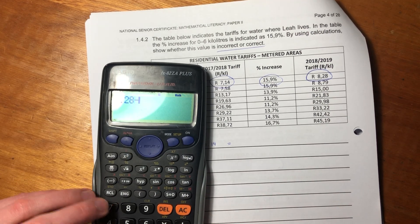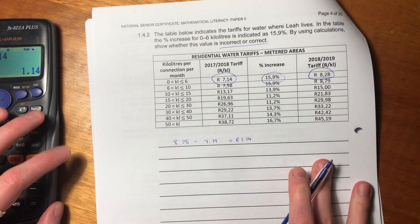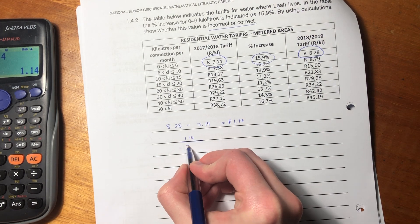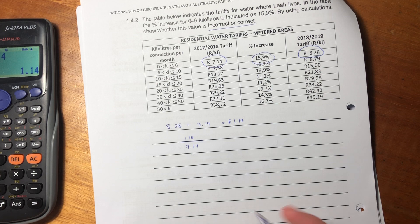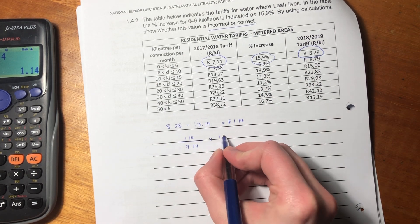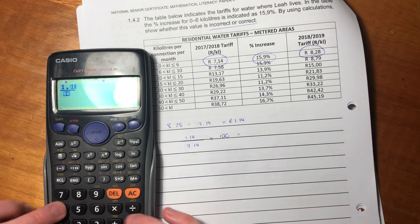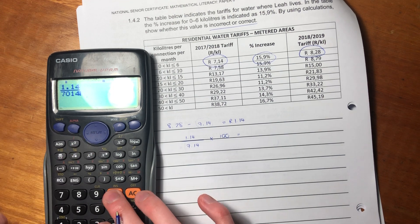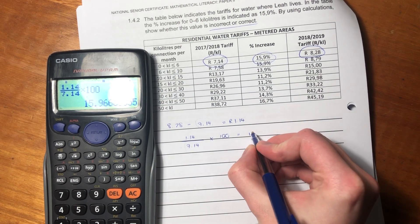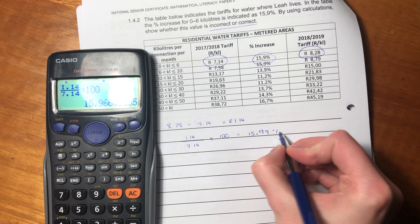We're going to say 8.28 minus 7.14 to figure out how much it's increased by in rands and cents. It's increased by 1.14 rand, but we want to work out the percentage. So we say 1.14, which is the increase, over 7.14, which is what it originally was, then we're going to times that by 100. That is how we work out a percentage. We type that into our calculator, and it gives us a percentage. I'm getting 15.97%.